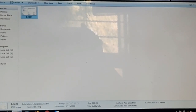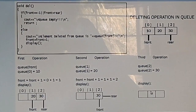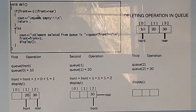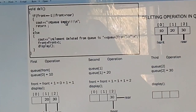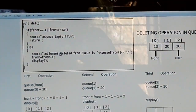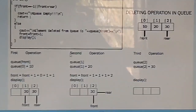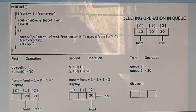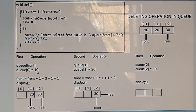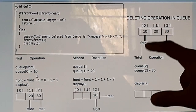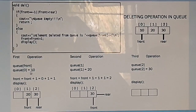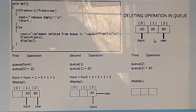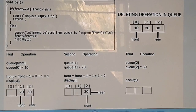Next, we move to the deletion operation. In the deletion function, we first check if front equals minus 1 or front is greater than rear — if so, the queue is empty, an underflow condition. Otherwise, we display Q[front] as the deleted element. For the first deletion, Q[front] = Q[0] = 10 is deleted, and front is incremented from 0 to 1.